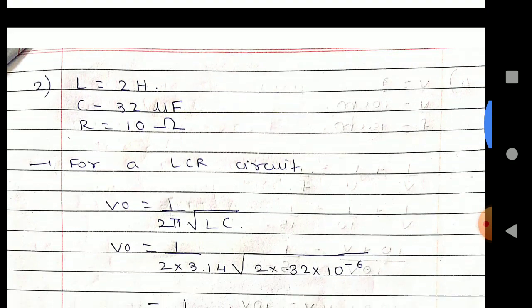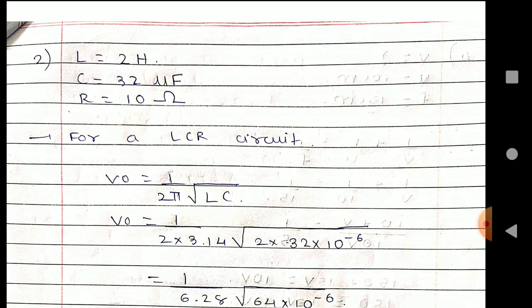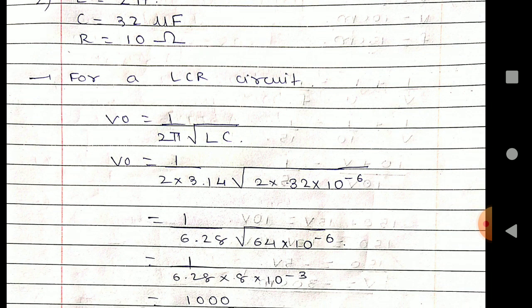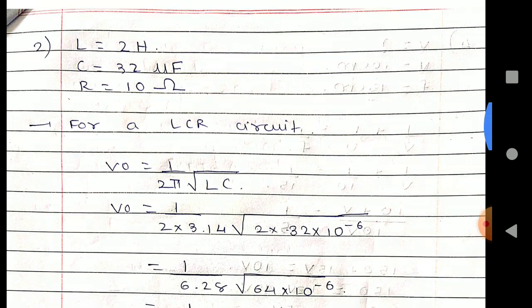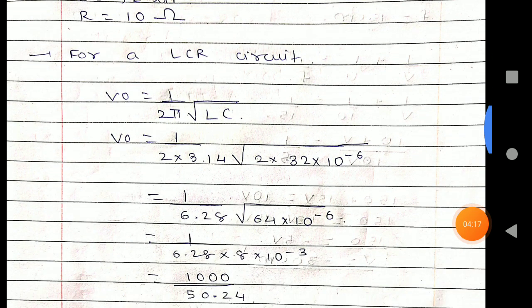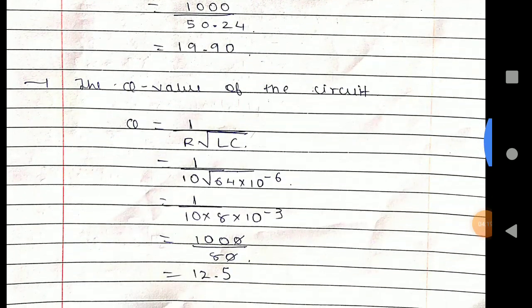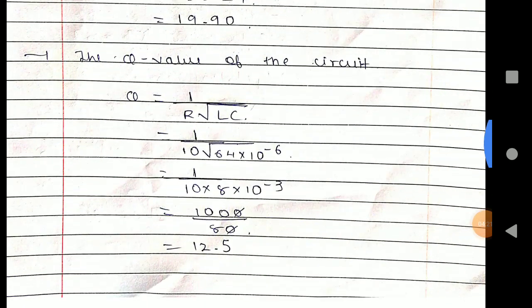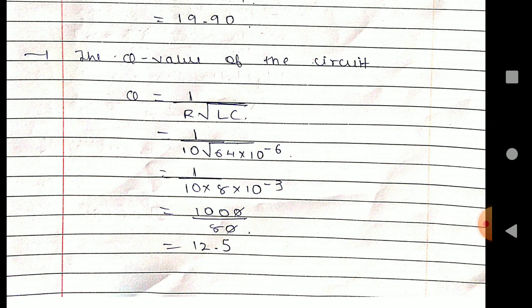Using equation number 2: L equals 0.2 H, C equals 32 microfarad, R equals 10 ohm for LCR circuit. You can just have a look at it, you can write down. The answer is also given. Now the Q value of the circuit, you can just go ahead to the formulae.